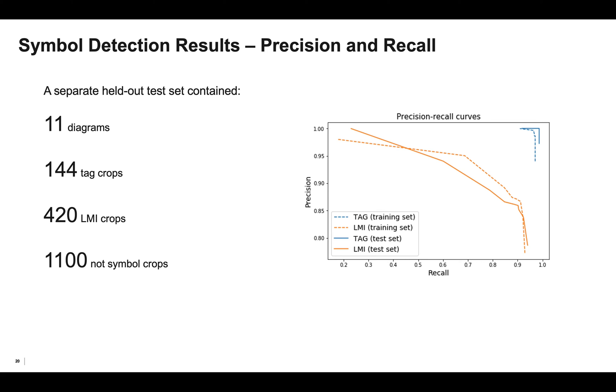To evaluate our symbol detection approach, we created a separate held-out test set with 11 diagrams containing 144 tag crops, 420 LMI crops, and 1100 not symbol crops. Looking at the precision recall curves from our evaluation, we found that the training set and test set performance for both classes were close to each other, which means that the model is generalizing and not overfitting to the training set.